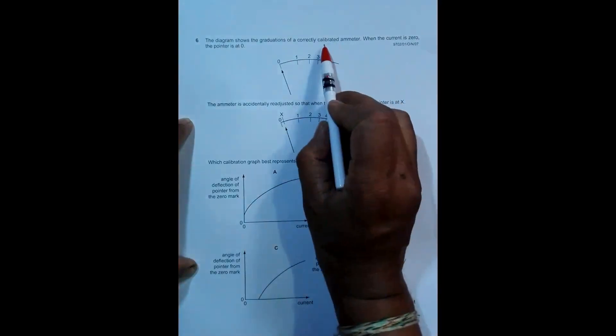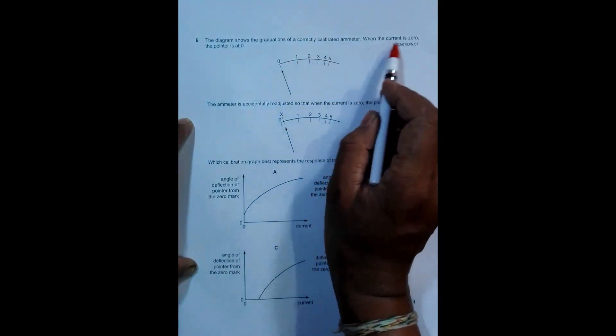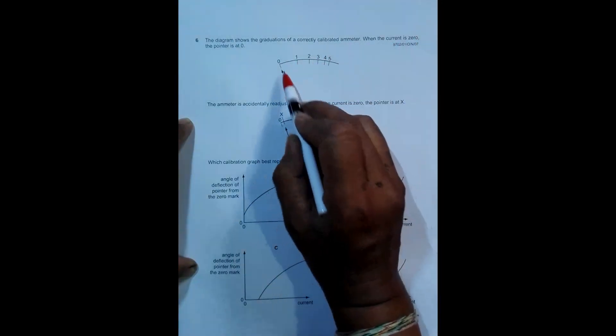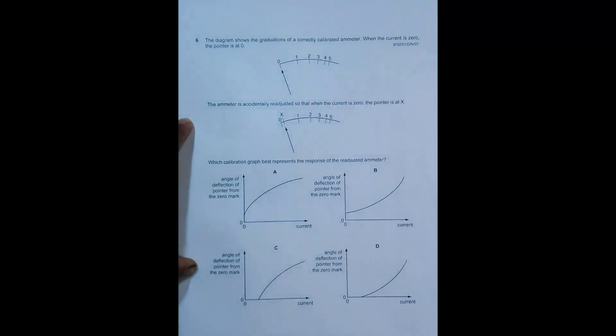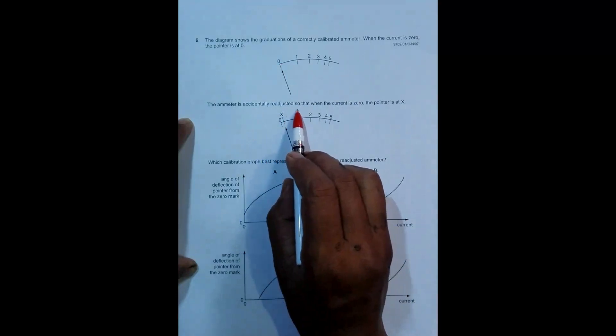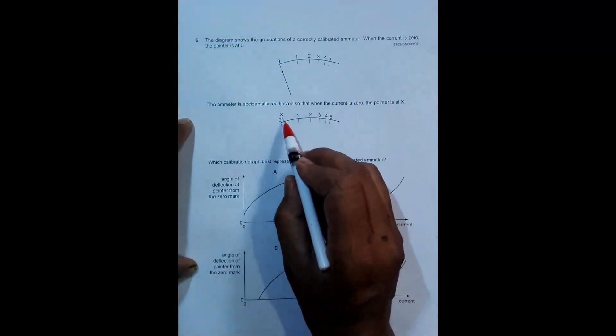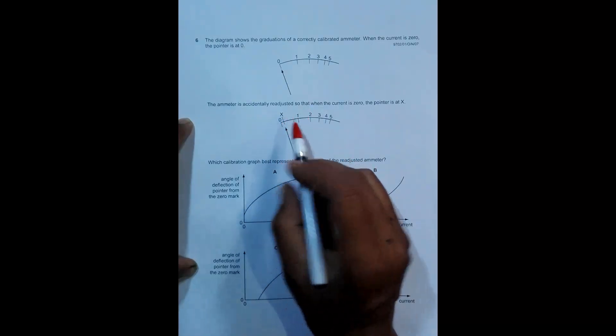This is a correctly calibrated ammeter. When the current is zero, the pointer is at zero, correct. The ammeter is accidentally adjusted by somebody so that when the current is zero, the pointer is at x.